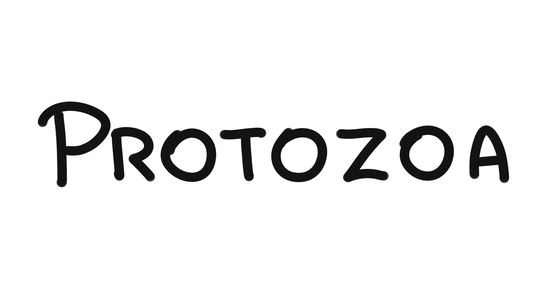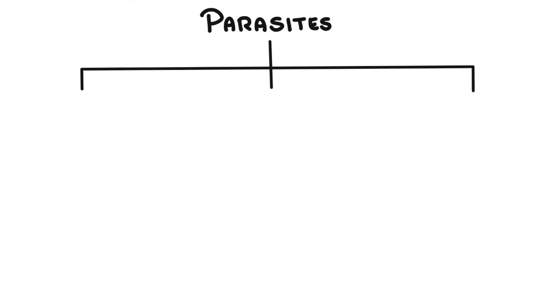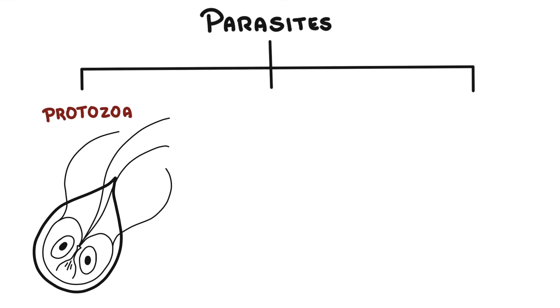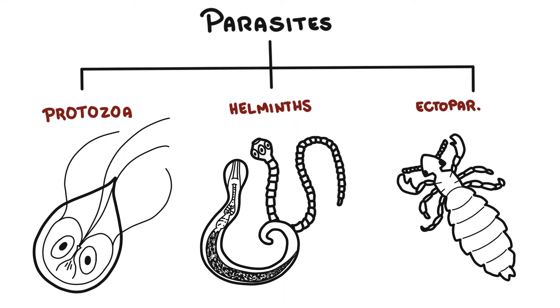In this video, we will focus on protozoan parasites. To recap, parasites can be divided into three main types: protozoa, helminths, and ectoparasites.